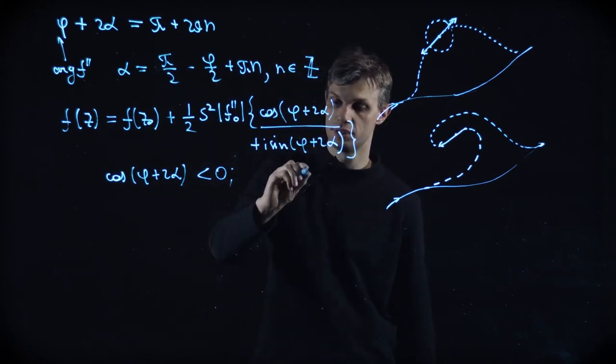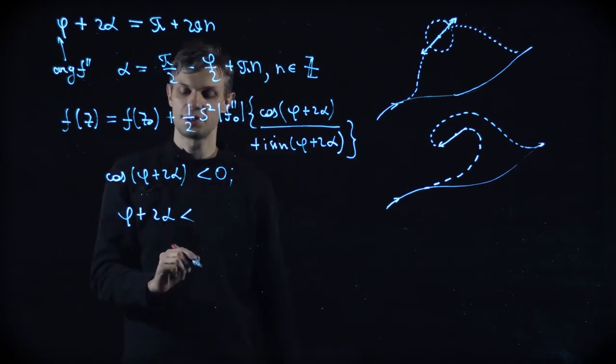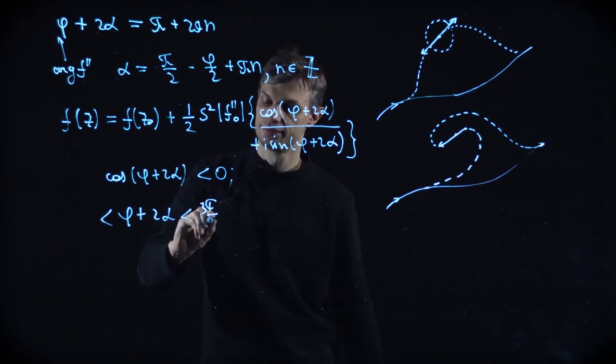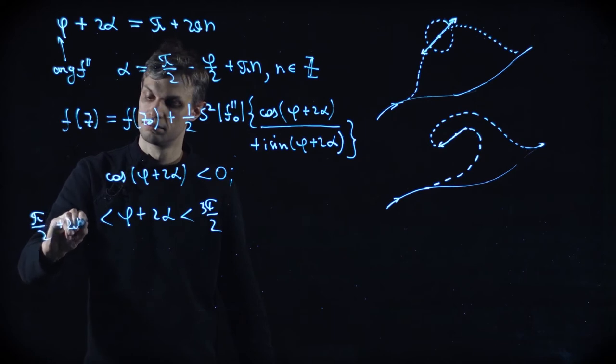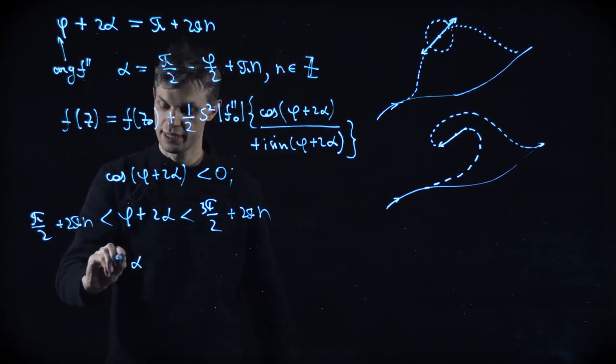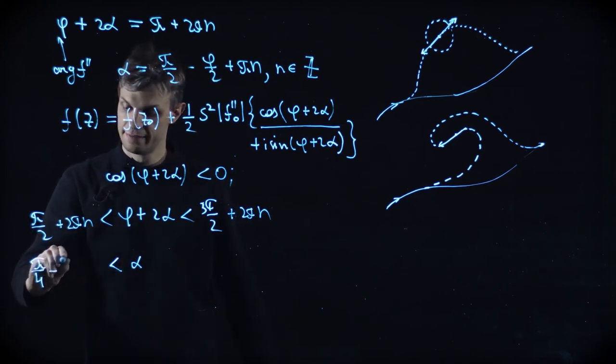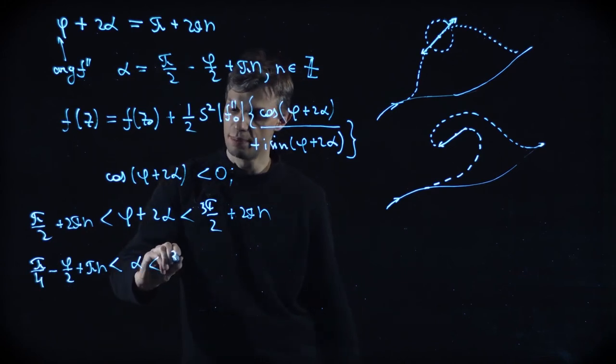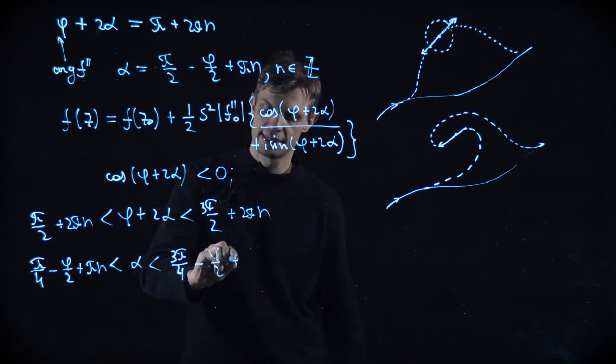Well, the solution is trivial. So phi plus 2 alpha should be constrained to the region from minus pi by 2 and pi by 2. So here is the solution. Alpha is greater than pi by 4 minus phi by 2 plus pi n and smaller than 3 pi by 4 minus phi by 2 plus pi n.